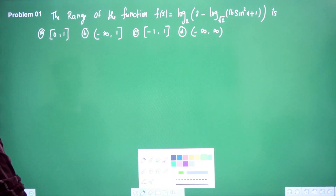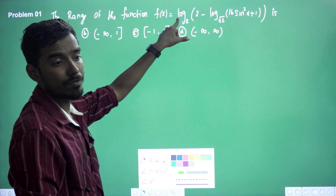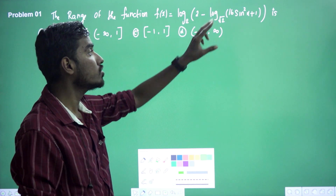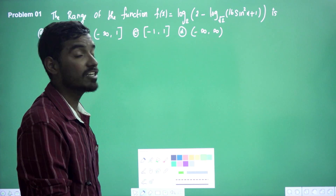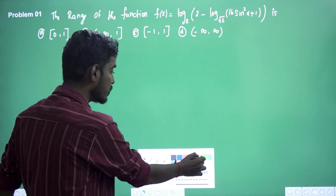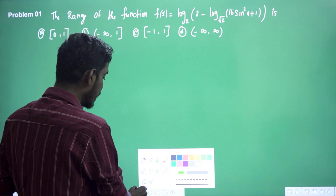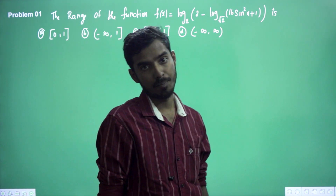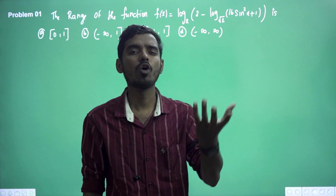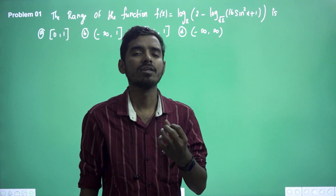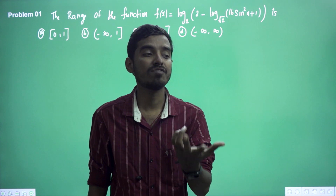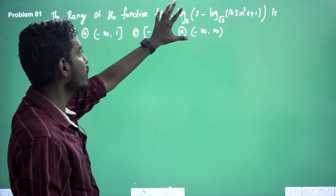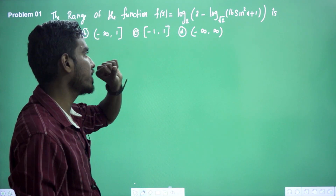We need to find the range of the function f(x) = log base 2 of (2 minus log base root 2 of (16sin²x + 1)). So we need to find the range for this function — they are asking range, not domain. Range is the set of all output values; domain is the set of all values of x for which f is defined.